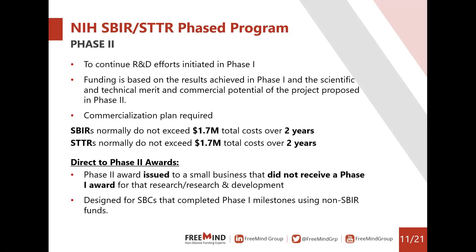Phase two continues the R&D efforts initiated in phase one. Funding is based on the results achieved in phase one, plus the scientific and technical merit and commercial potential of the phase two proposal. A commercialization plan is required. In terms of award budget and period, both SBIR and STTR phase two awards do not exceed $1.7 million in total over a period of two years.